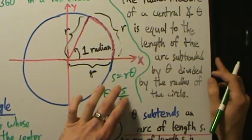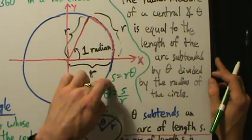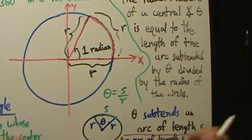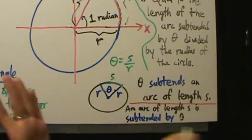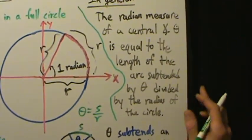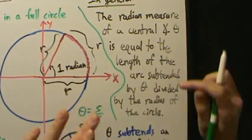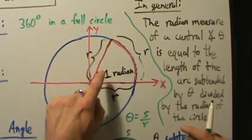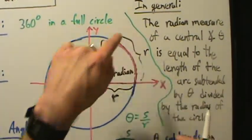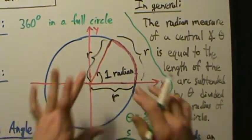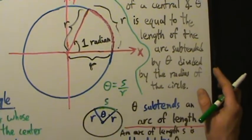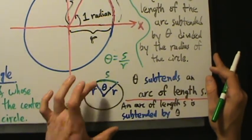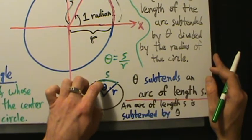From the definition theta = S / R, you can derive the arc length formula: S = R·theta. So if you have a circle with a central angle theta and radius R, you can find the arc length S. This just comes from the definition of angle measure in radians. Dividing the arc length by the radius gives you the radian measurement of theta.